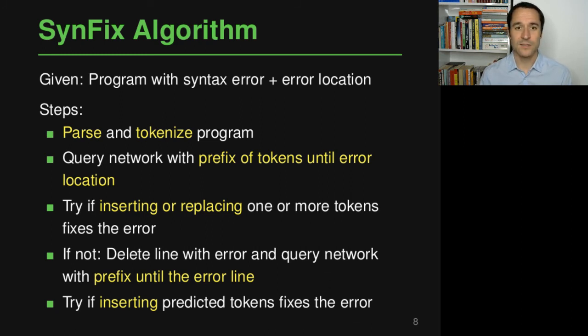So more specifically what happens is that we start by parsing and tokenizing the program so at the end we have a sequence of tokens and then the model is queried using a prefix of these tokens and specifically at first the model is queried with the prefix that ends at the error location. Now what the model will do is it will predict a token and then if you query it again with this token it will predict more tokens and then what the algorithm does is to try if we can either insert this predicted list of tokens into the code or if we can replace one or more tokens in the existing code around the error location in order to fix the error. If any of these two work and if we at the end get a piece of code that does not have the error anymore but that has fixed the error then we are done and this suggested fix is given back to the user.